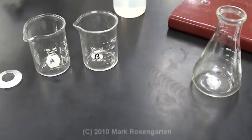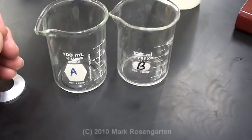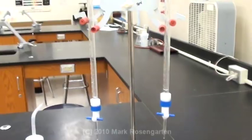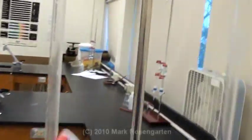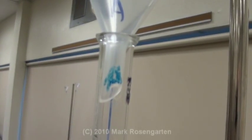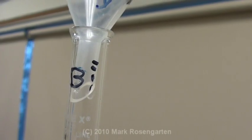The equipment you need to make this lab work are two beakers, one labeled A for acid, the other labeled B for base. Two acid-base burettes, one labeled A for acid, the other one labeled B for base.